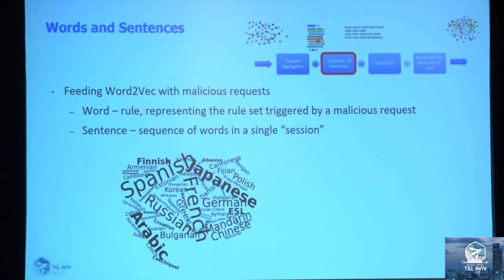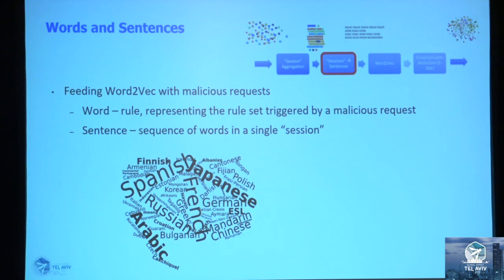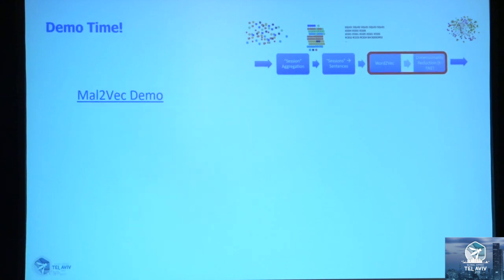Of course, you have even more complex examples that incorporate eight different rules with various types. Again, choosing the one representative is based on the same parameters. Now that we have the concept of what a word and sentence are, we took the separate requests, chose a representative rule for each one, and combined them into a sentence — the same as natural language — which we can then feed into the Word2Vec model.